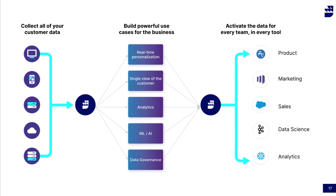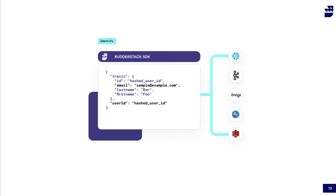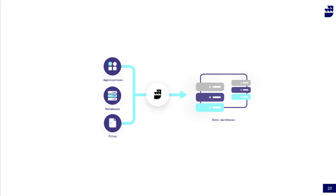Let's talk about how RouterStack helps you do that. First, we make it easy to ingest and connect all your data from every part of the stack, without the painful integration work. The EventStream can populate 150 cloud tools in real time, including marketing CDPs, but also tools like Kafka and Redis.